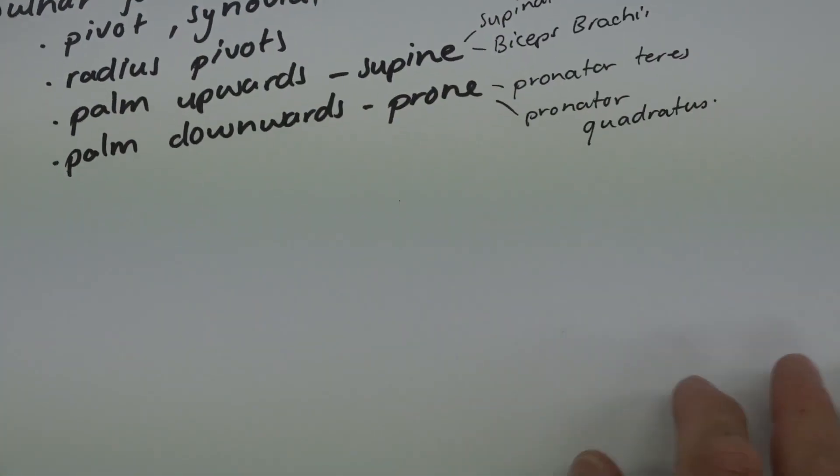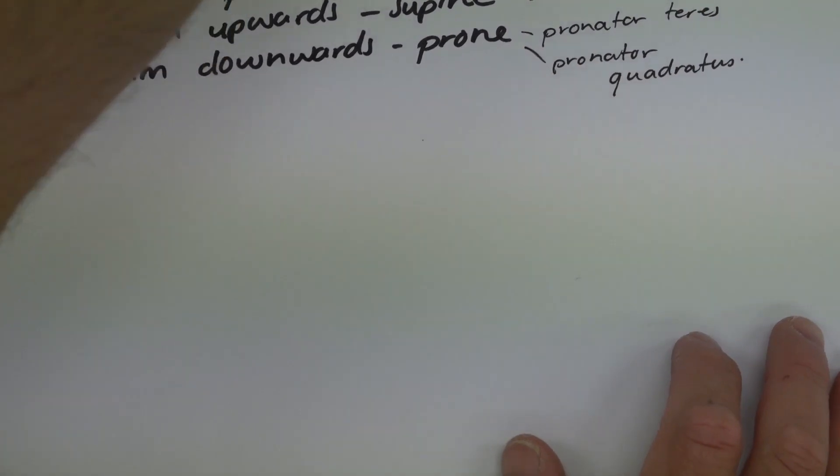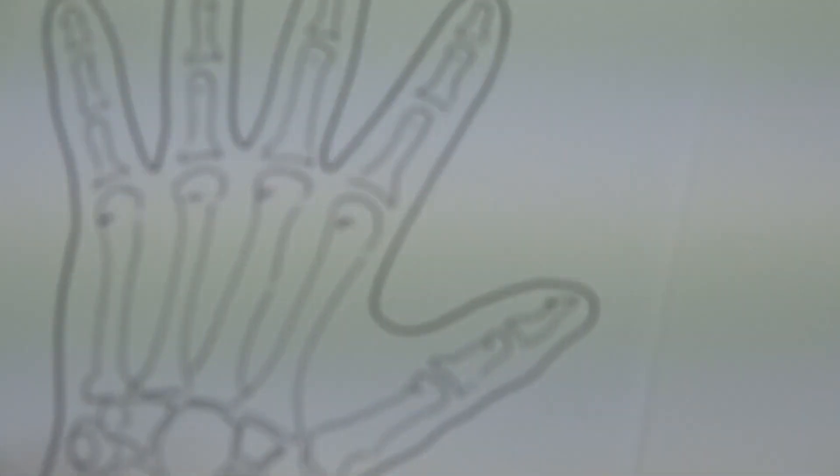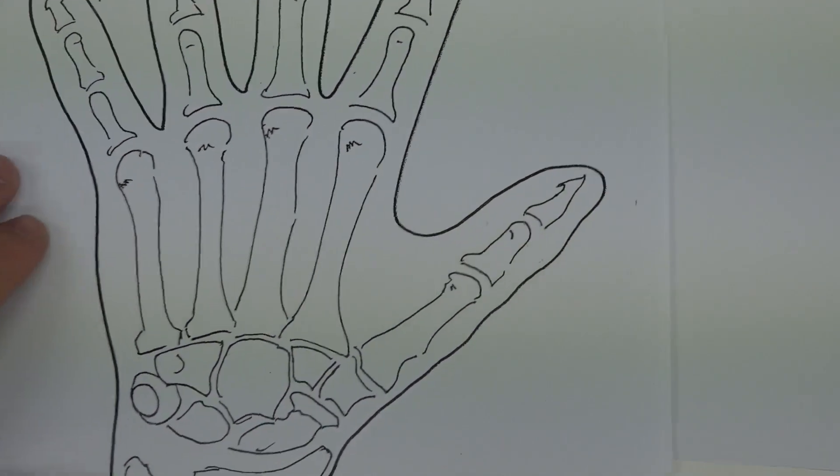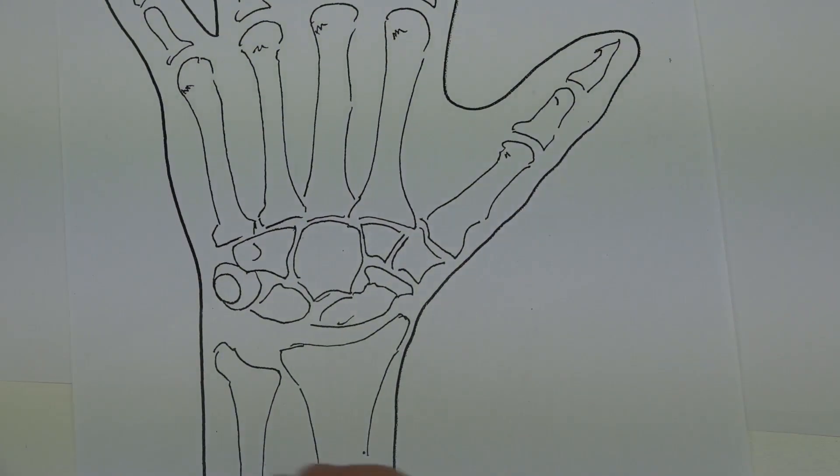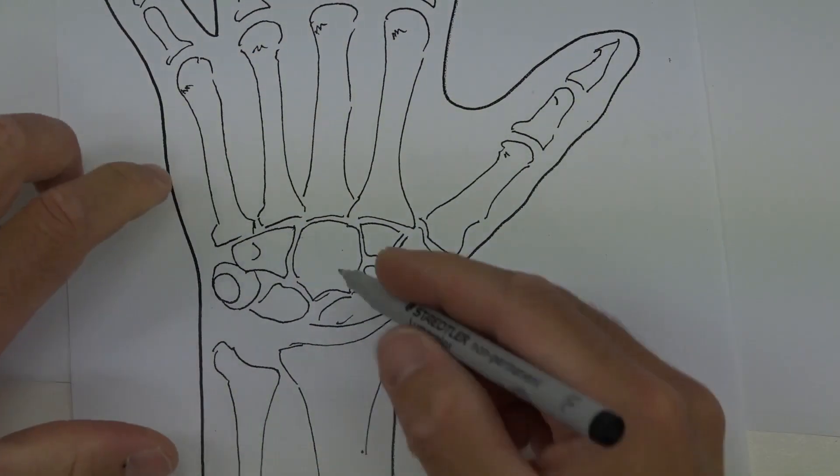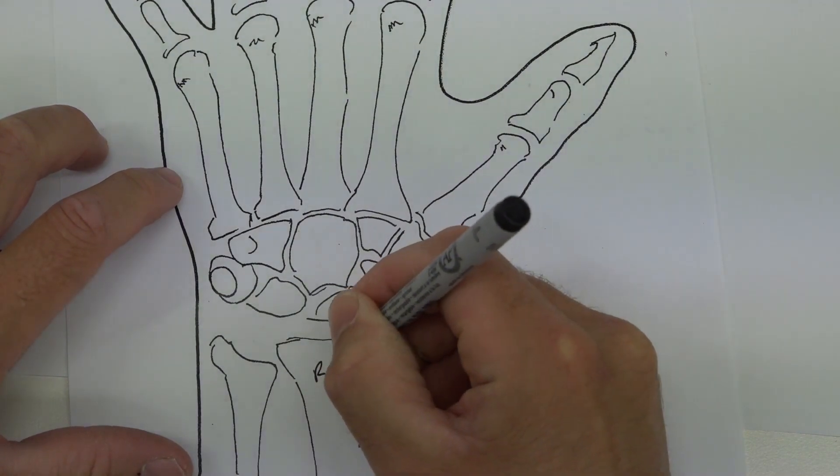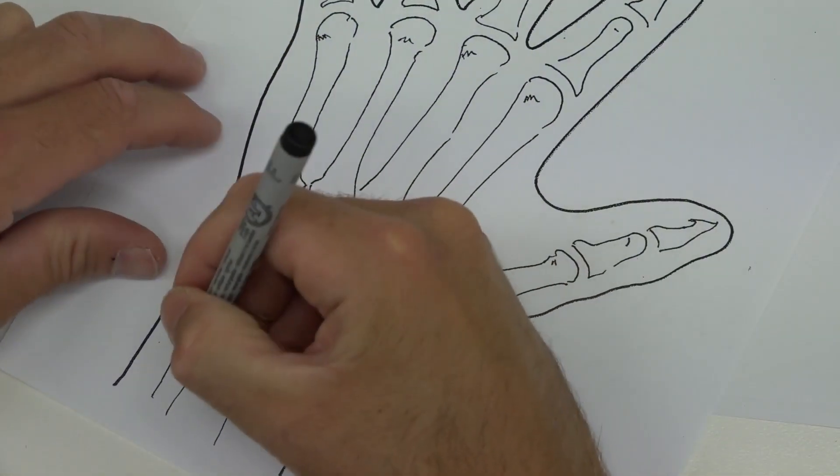If we look at this template which will be posted onto your Learn Online page, we can have a go at labeling some of these bones. You can see that this one here is the radius.